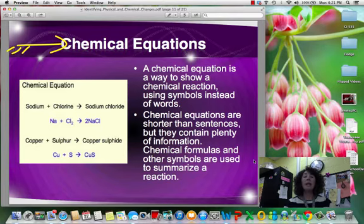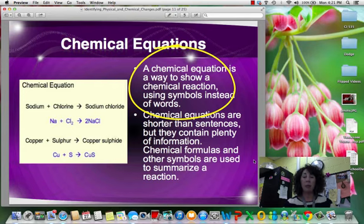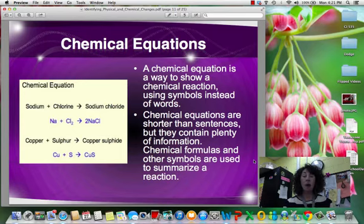Now, we can illustrate these different types of reactions by using what is called a chemical equation. Just like we have a shorthand way to write out the names of a compound, for instance, sodium chloride, we can say NaCl. We use those chemical formulas. We can use a chemical equation to show a reaction taking place. We're using those symbols instead of words. They're shorter than sentences, but they contain all the information that we need to summarize what's taking place in that reaction.